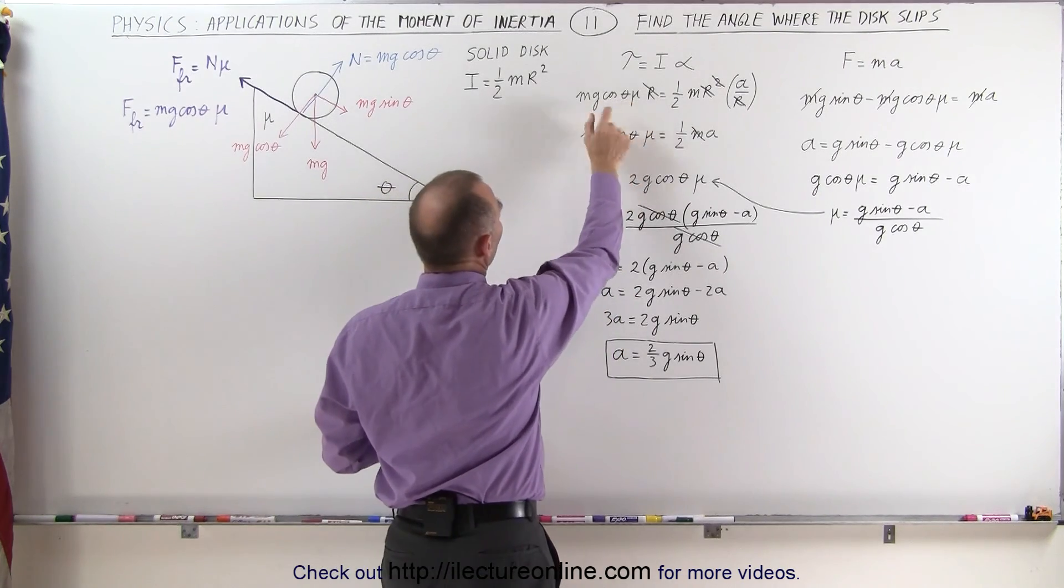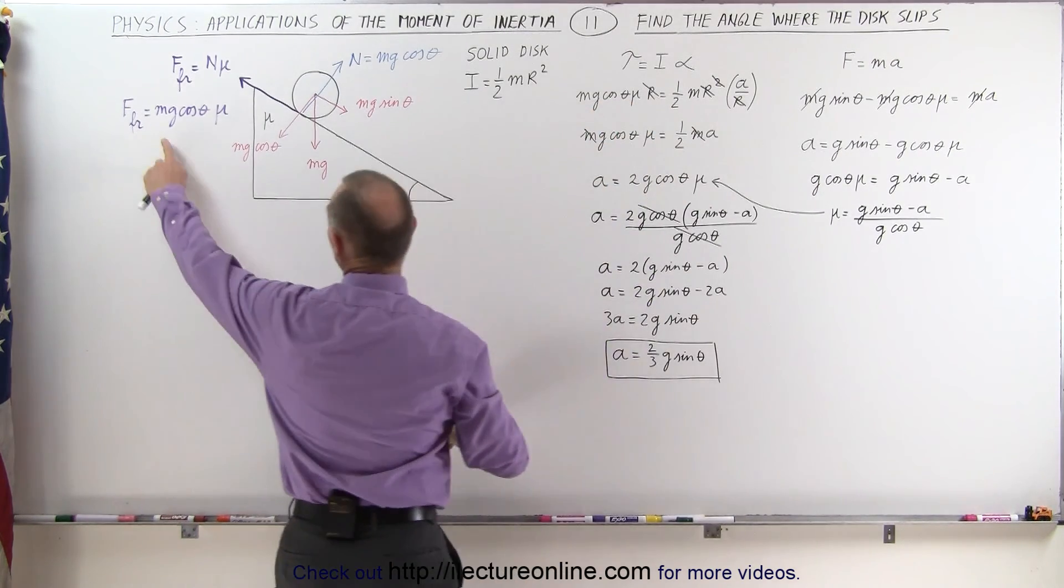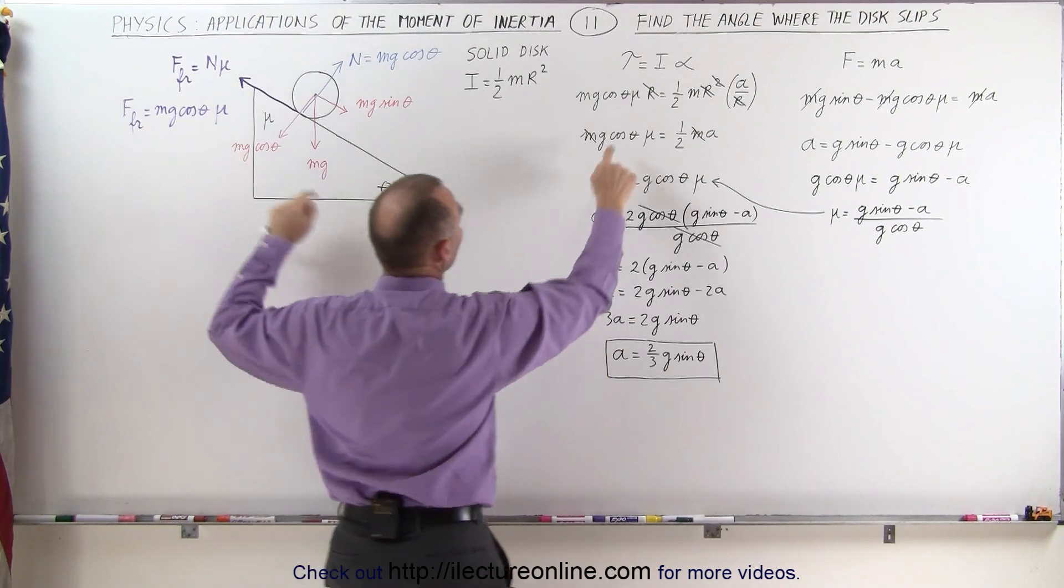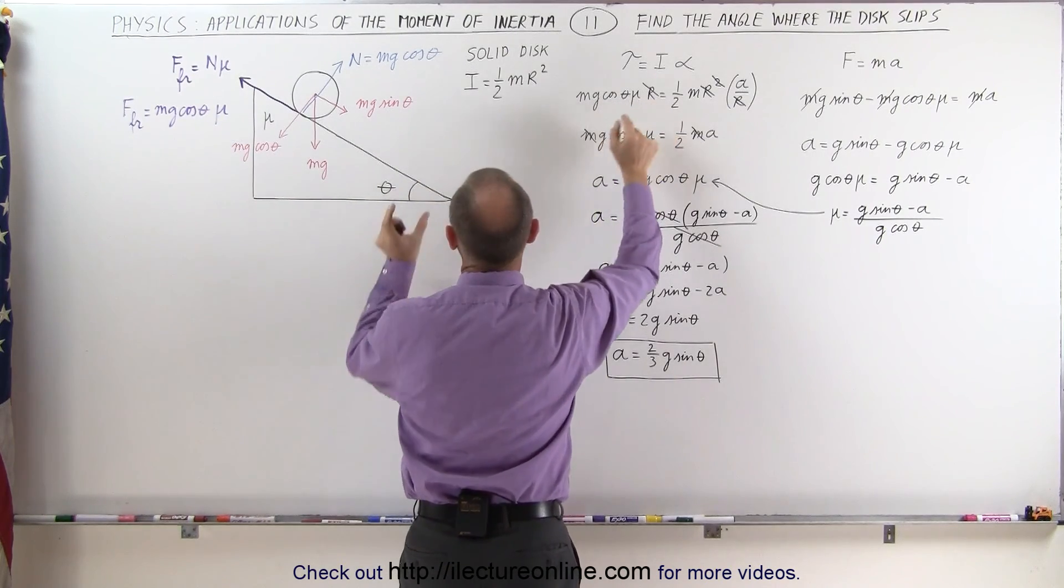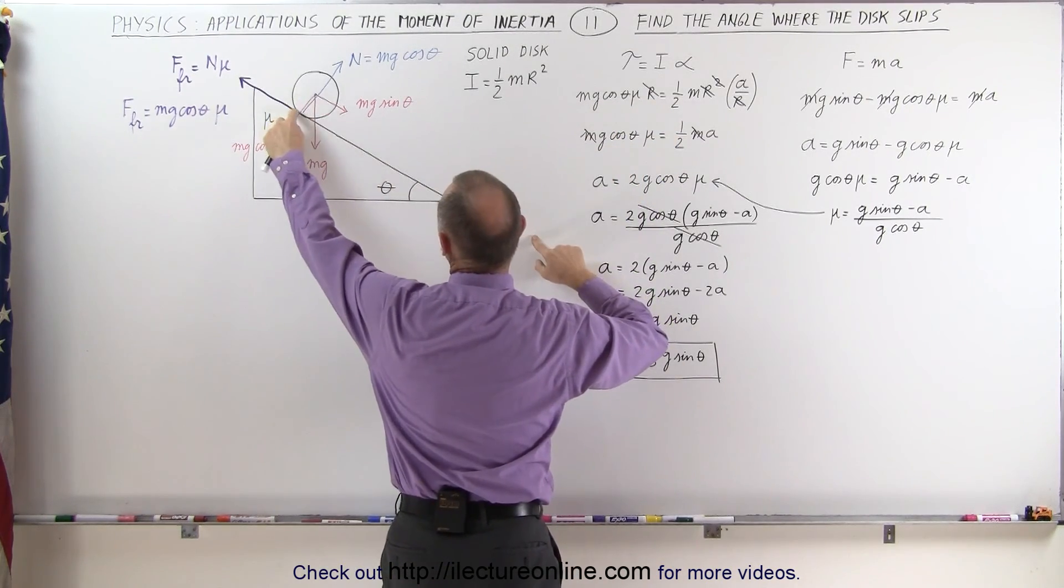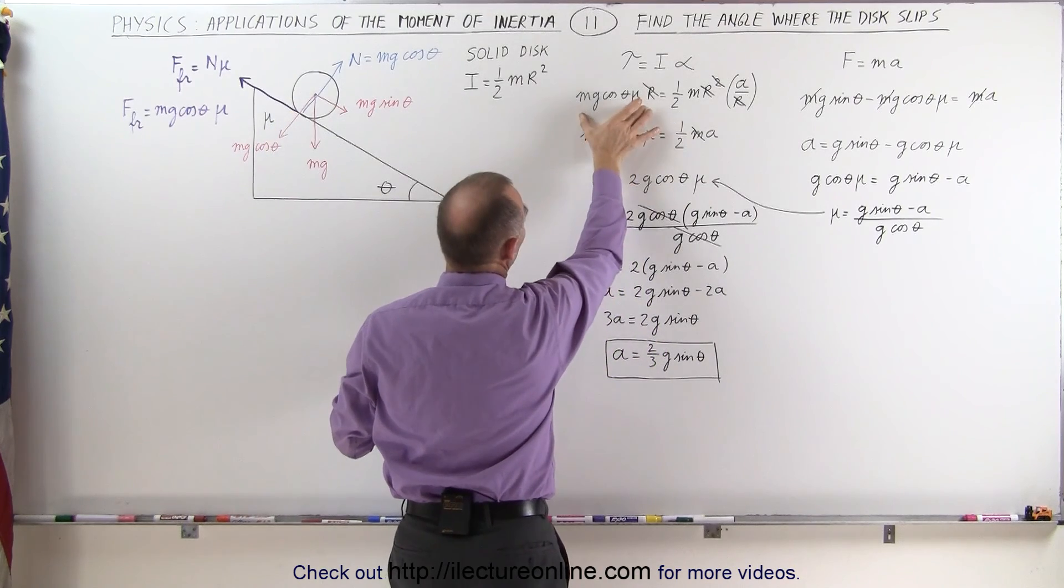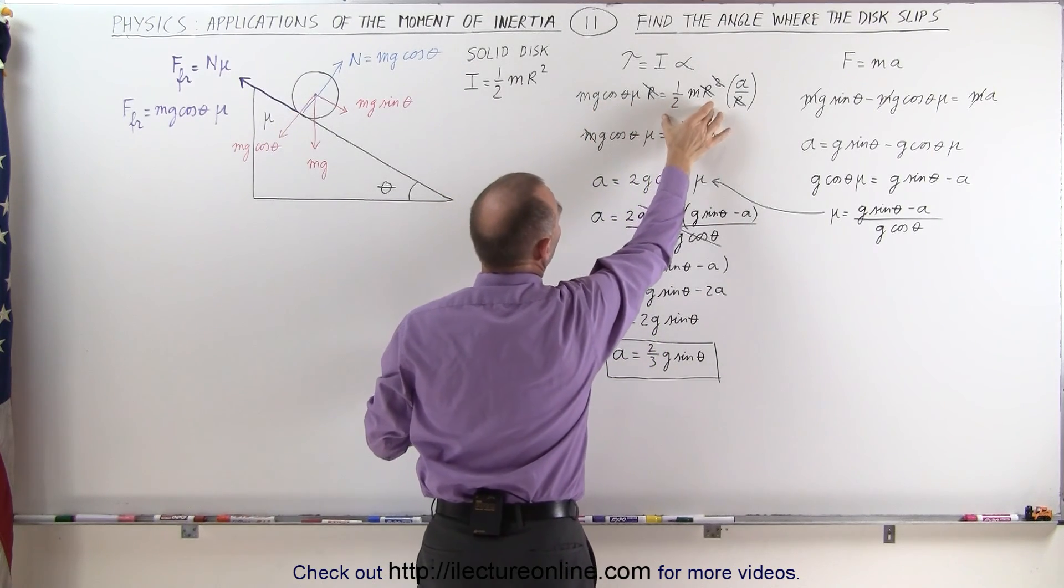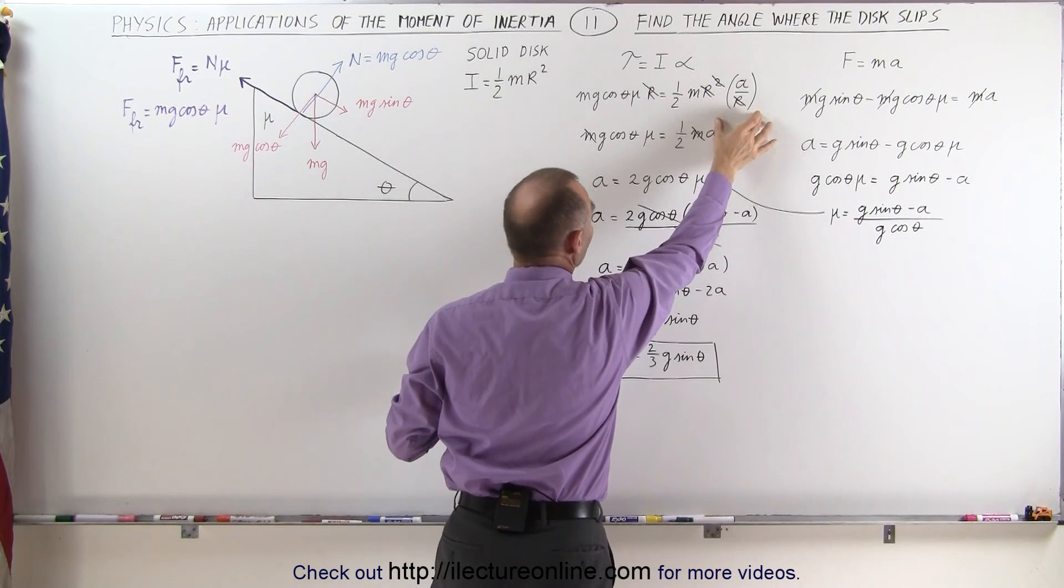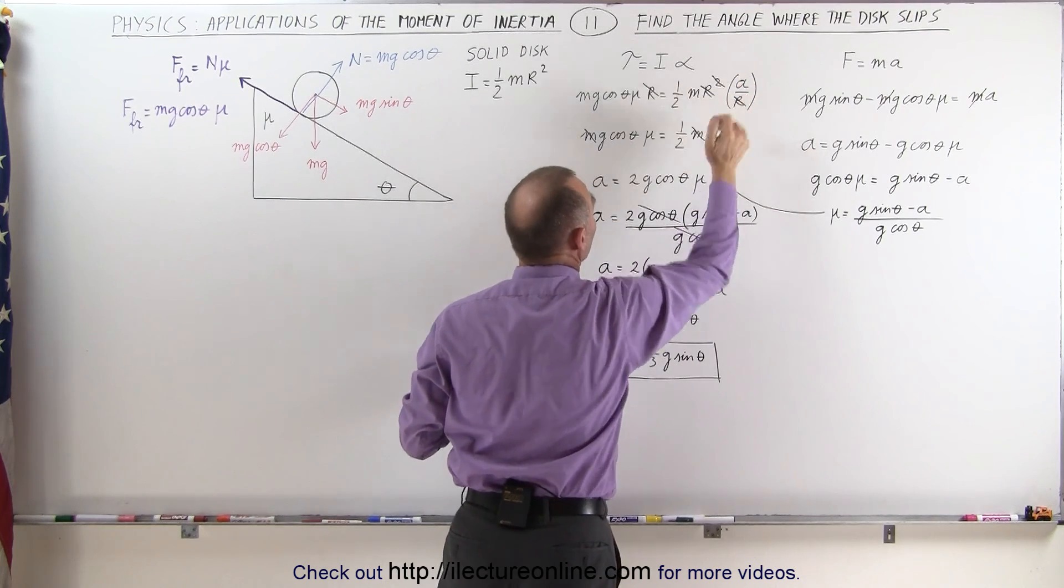So when we plug in the torque, which is caused by the friction force, which is Mg cosine theta times mu times R, that would be the distance from the point of rotation to where the friction force is acting, that's the torque is equal to the moment of inertia times angular acceleration, which can be written as a over R.